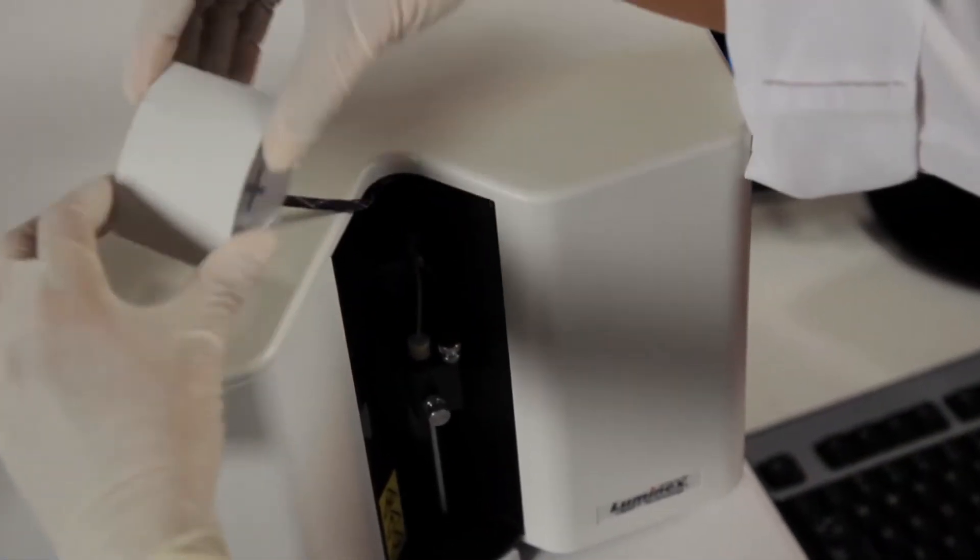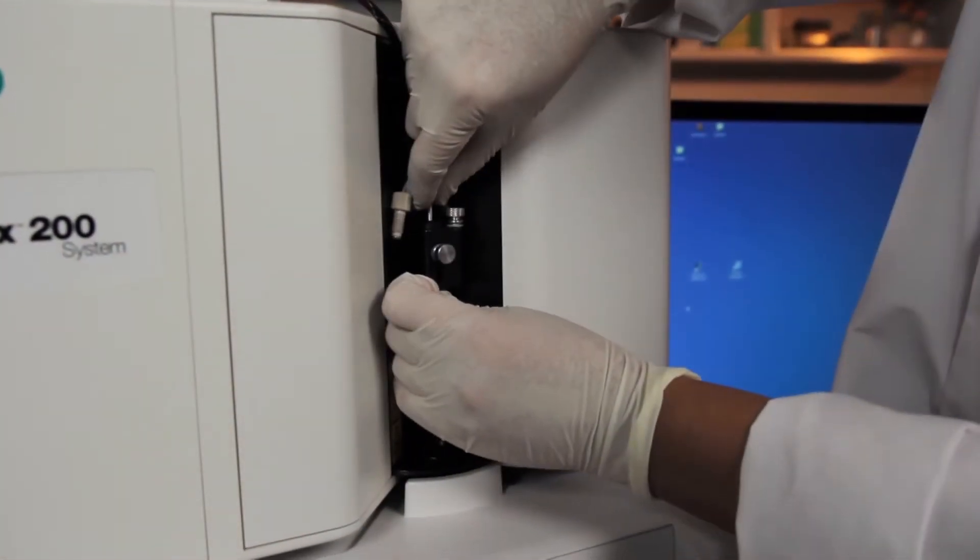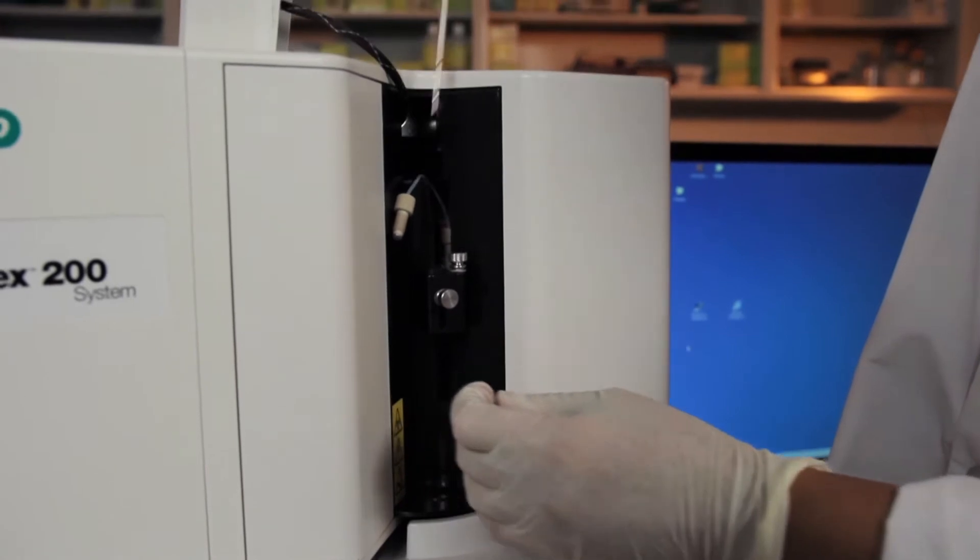Your Bioplex system uses a needle to pick up sample from each well of your assay plate. This needle can be removed for weekly cleaning or when installing a new needle. Removing the needle for regular cleaning or replacing the needle with a new one is a fairly easy process that requires only a few simple steps.